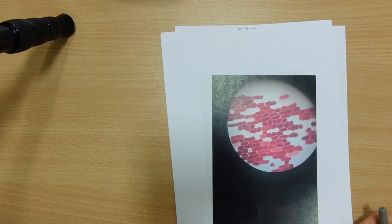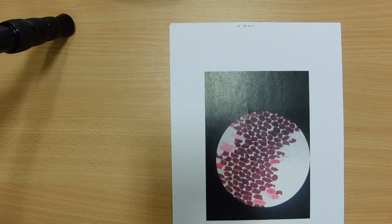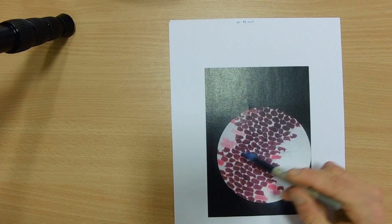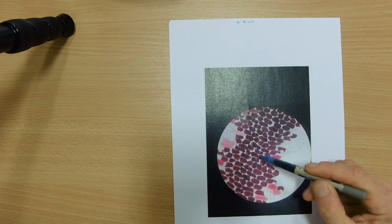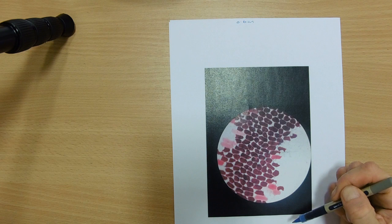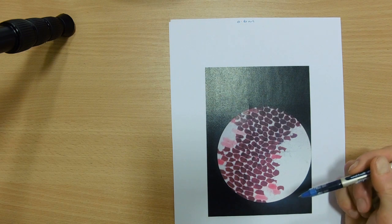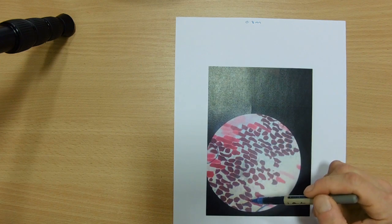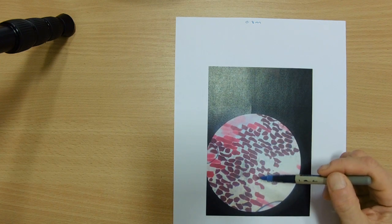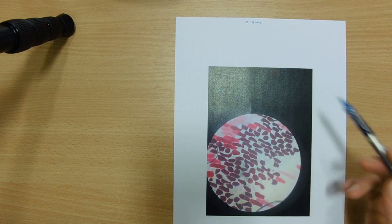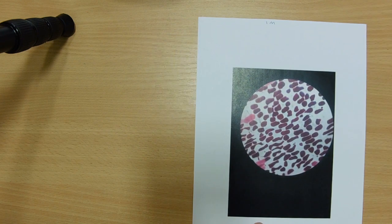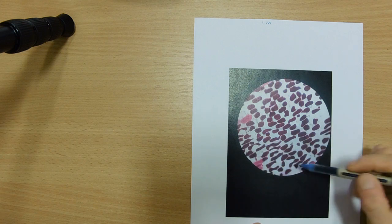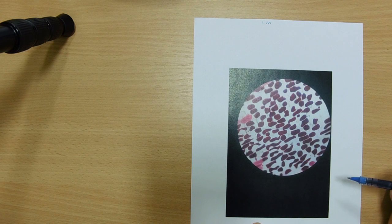Then, as we got to 0.6, I counted 30 cells and 25 of them were showing some signs of plasmolysis. 0.8 molar, again, I counted 29 cells and 28 of them were showing plasmolysis. And finally, at one molar, all of those cells that I counted in the quarter, 100% of them were plasmolyzed.